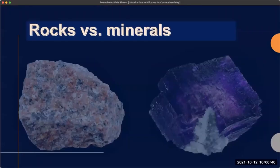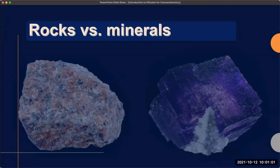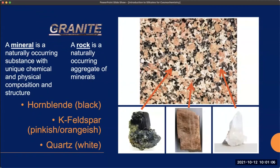I want to digress briefly, because this is for non-geologists, and a lot of the time people are confused about the difference between rocks and minerals. A mineral is essentially something with a single composition and a single crystal structure — a very definite composition and crystal structure — whereas a rock is made up of an agglomeration of minerals. As an example, here I've got a picture of granite. Granite is a rock. It is made up of a number of different minerals — the black mineral called hornblende, a pinkish-orange mineral which is a potassium feldspar, and a white mineral which is quartz.